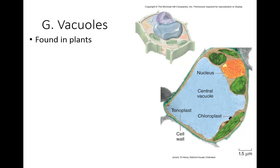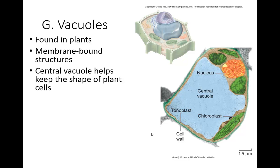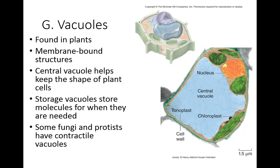Vacuoles are found in plants. And they are basically membrane-bound structures with a lot of fluid inside. And they help keep the shape of the plant cells. So if there isn't enough fluid in the vacuole, the cell will shrivel. If there is lots of fluid in there, then it will keep it stiff and firm. There are different types of vacuoles. Some storage vacuoles will store molecules for when they are needed. And then some fungi and protists have contractile vacuoles that also will help change the shape of the cells when needed.